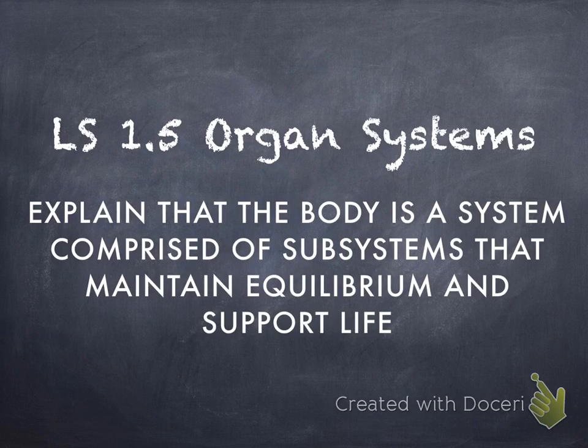All right guys, now we are going to talk about organ systems and how our body, which is an organism, is made up of all these subsystems and how those subsystems work together to help us maintain equilibrium and homeostasis. We've been talking about the body system for a while, starting with cells. A bunch of cells work together to make tissues, tissues work together to make organs, organs work together to make organ systems, and organ systems work together to make an organism.